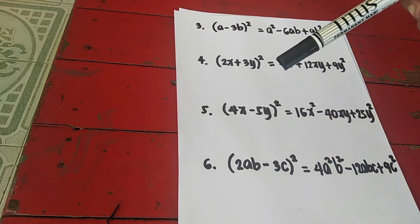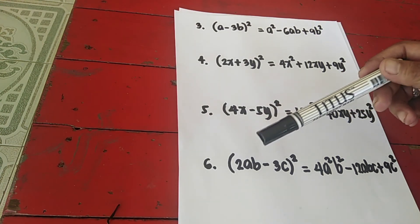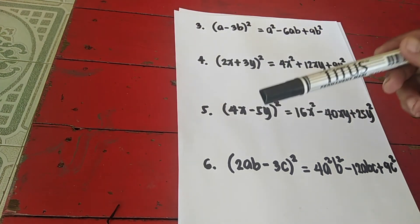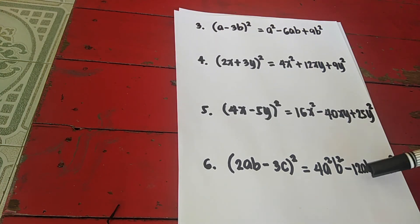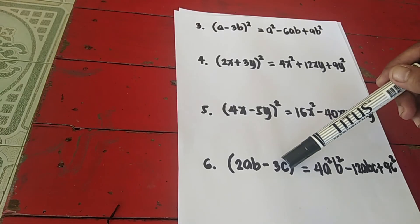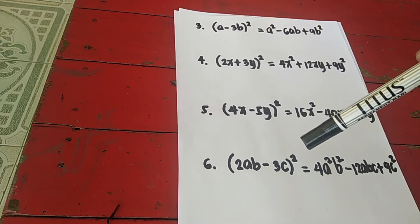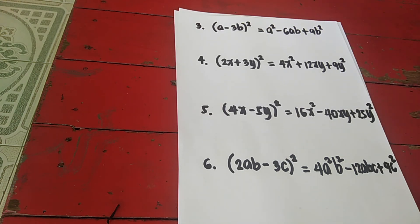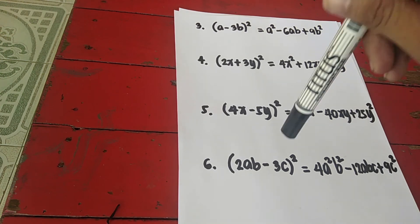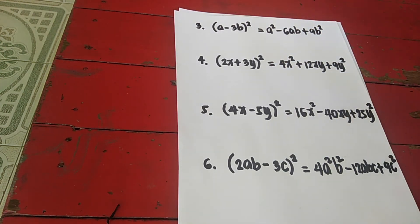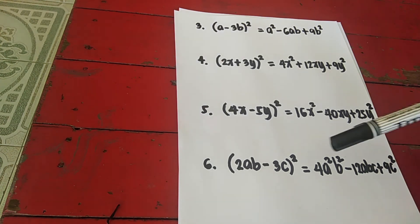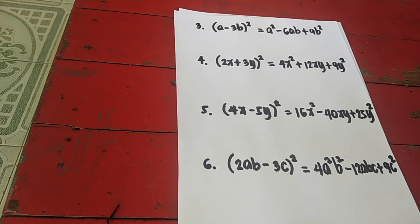To repeat the square of a binomial for (2ab − 3c) squared: square the first term — 2ab times 2ab is 4a squared b squared. Multiply 2ab and 3c: 2 times 3 is 6abc, times the constant 2 gives 12abc. The sign of the middle term depends on the given — since it is minus, the middle term is minus. The third term is always positive — 3c times 3c is 9c squared. So the answer is 4a squared b squared minus 12abc plus 9c squared.